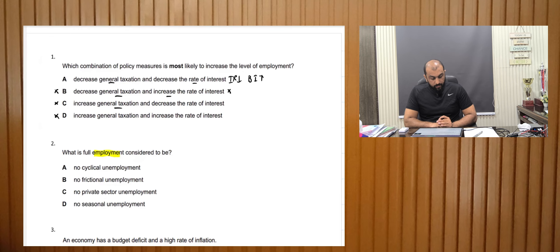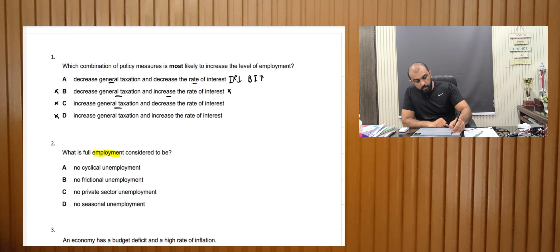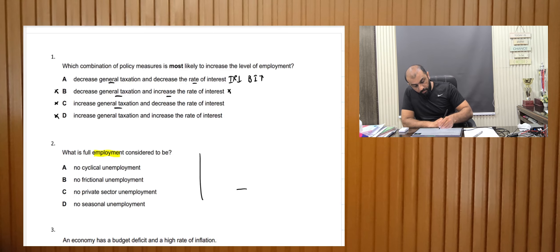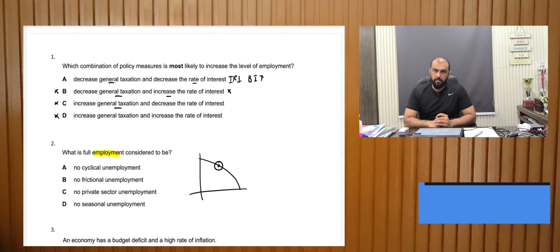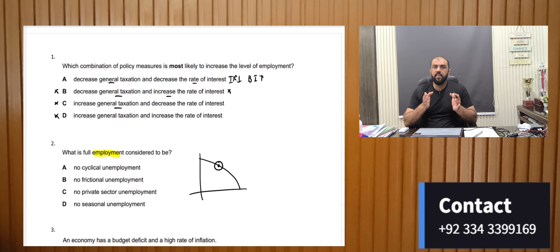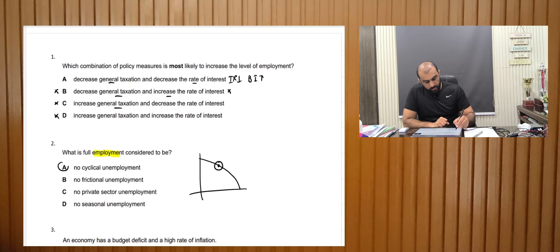Full employment basically means when there is no cyclical unemployment — all resources are fully utilized. We are operating at the full employment level of the PPC. Whenever there is full employment there will be frictional unemployment, but there will not be cyclical unemployment. This is a theoretical question — if you know the concept you can get it right.